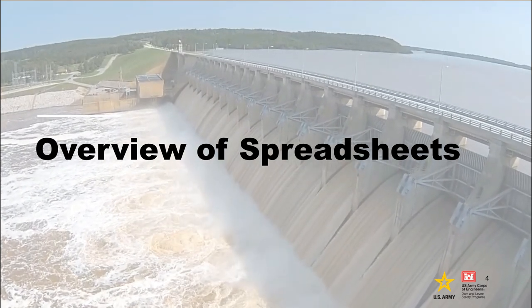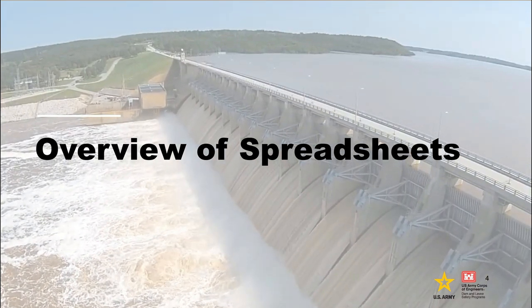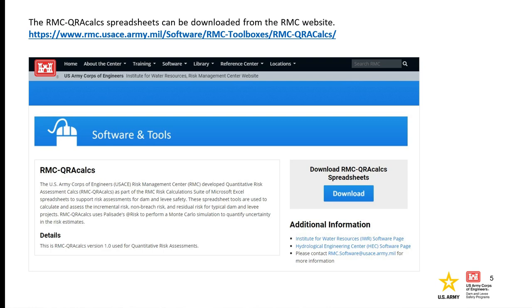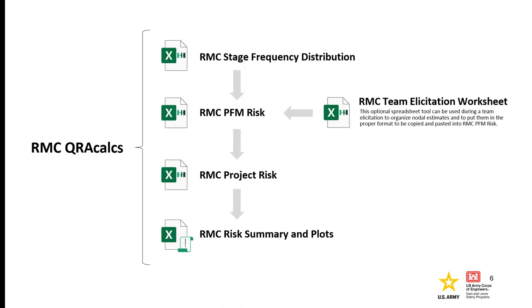We will begin with an overview of the spreadsheets. The RMC QRA Calcs spreadsheets can be downloaded from the RMC website. Follow the address at the top of the screen, then click download — the spreadsheets will be combined in a single zip file. RMC QRA Calcs was developed to support risk assessments for dam and levy safety. These spreadsheet tools are used to calculate and assess the incremental risk, non-breach risk, and residual risk for typical dam and levy projects. There are four main spreadsheets: data from RMC Stage Frequency Distribution feeds into RMC PFM Risk, which then feeds into RMC Project Risk. RMC Risk Summary and Plots links with RMC Project Risk to plot the data.